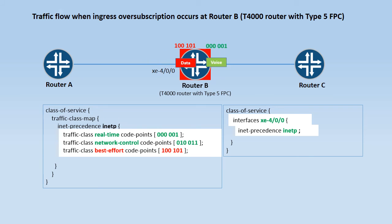In this example, the router forwards the voice packet with code points mapped to the real time traffic class, and drops the data packet with code points mapped to the best effort traffic class. Thus, the user-defined traffic class map can be used to select packet priority during ingress over subscription.